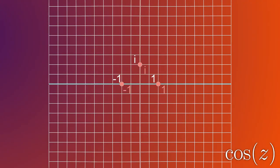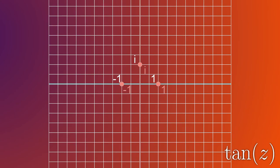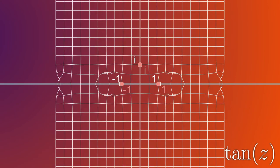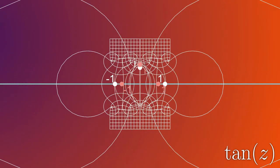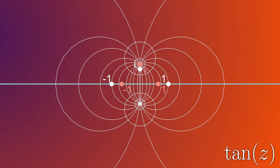Continuing with trig functions, we could try tangent of z as well. Tangent again shows some artifacts due to how much it expands a part of the plane, but again, you can get the idea of it.